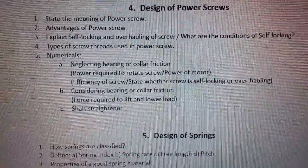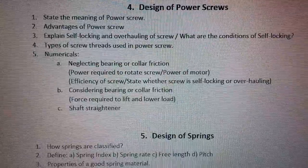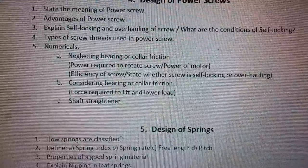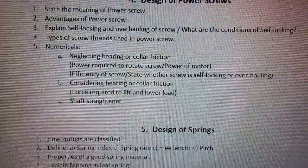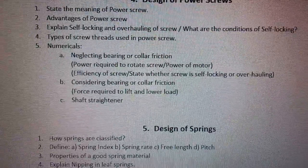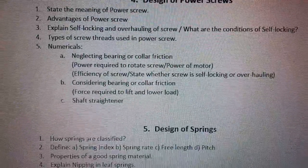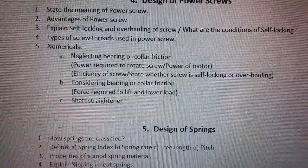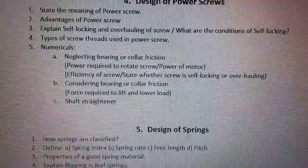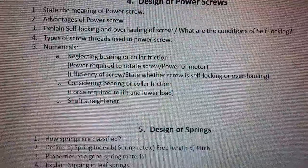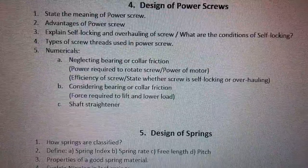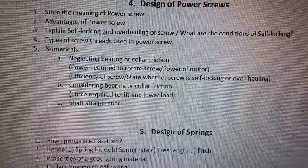The numericals which can come from this chapter are: first, those neglecting bearing or collar friction, where they can ask the power required to rotate the screw, or the power of the motor to rotate the screw, or the efficiency of the screw, or to state whether the screw is self-locking or overhauling.